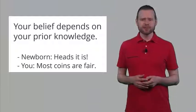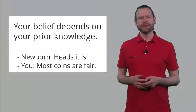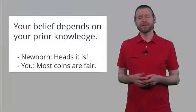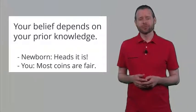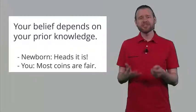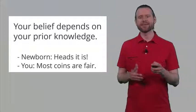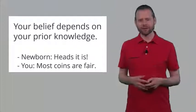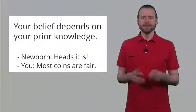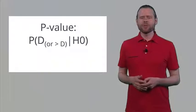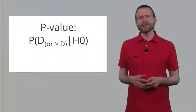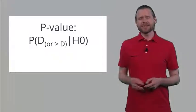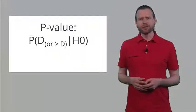But you have prior beliefs that most coins are fair. You might think: three heads in a row is a perfectly likely observation. I am not changing my prior belief that this is a fair coin yet — you would want to see more evidence. Combining your prior belief with the data is possible in a Bayesian sense. It's not possible when you just calculate p-values.